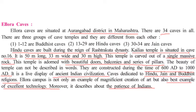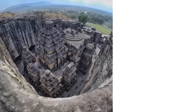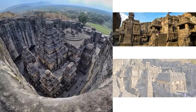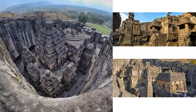Caves dedicated to Hindu, Jain, and Buddhist religions are present at Ellora. It is considered that the Ellora Caves give the best example of human technology and the patience of Indians, as these caves were created with just a normal hammer and chisel — not modern equipment — and it took three to four hundred years to make them. This is the top view of the Kailash Temple, the single rock-cut temple, considered the biggest single rock-cut temple in all of India.